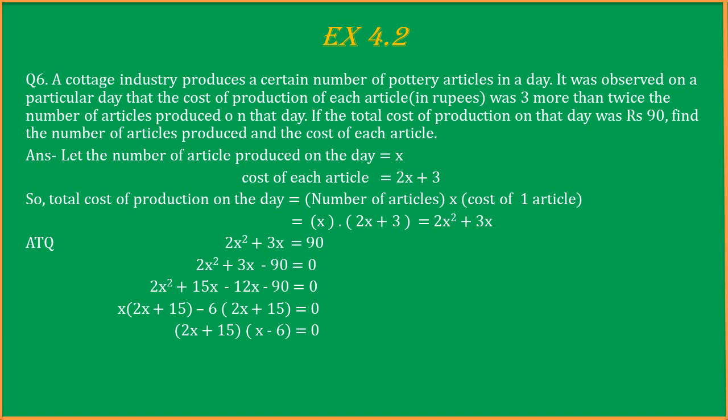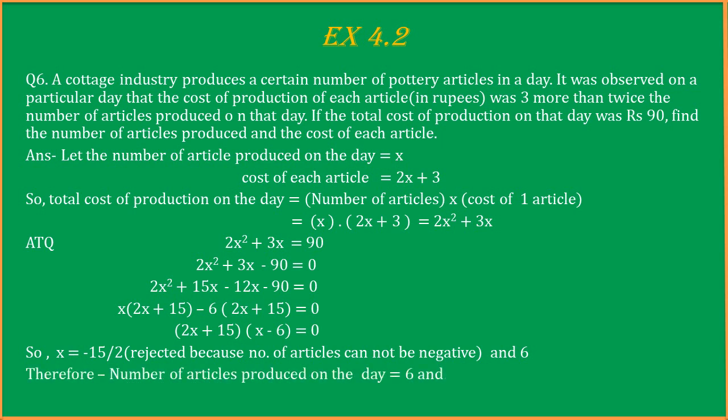Now let me find the solutions of these two. So our x values will be minus 15/2 and 6. Since number of articles cannot be negative, we will reject minus 15/2. So our x value is 6. That means the number of articles produced is 6. So the cost per article will be 2 into 6 plus 3, that will be rupees 15. Thank you.